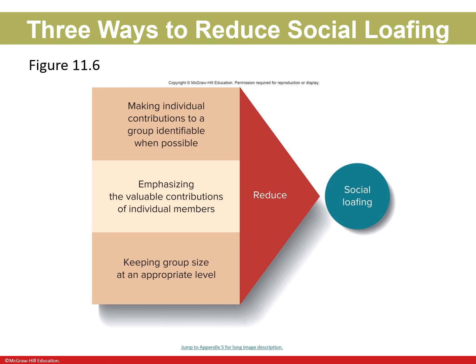Three ways to reduce social loafing: first, make individual contributions to a group project identifiable when possible; second, emphasize the valuable contributions of individual members; and third, keep group size at an appropriate level. These three things should reduce social loafing overall. That concludes Chapter 11 — Effective Teams. If you have questions, feel free to ask in class or send an email.